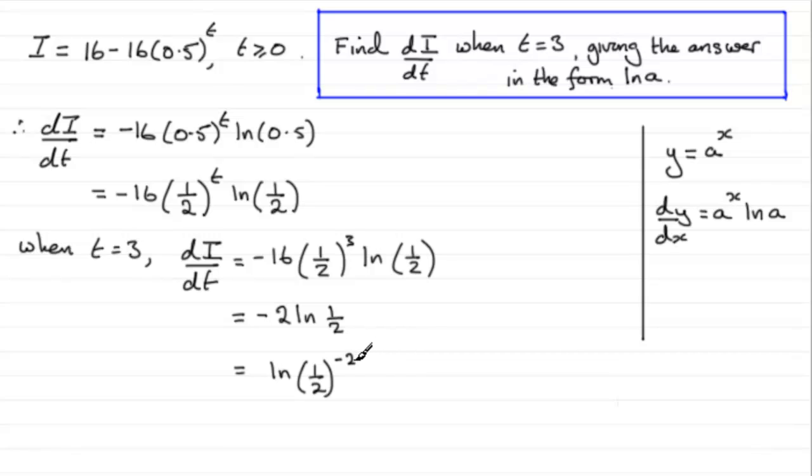Now when you've got something to the minus 2, that's 1 divided by a half, then all squared. So you're going to get the natural log of 1 divided by a half squared. Well, a half squared is a quarter. 1 divided by a quarter is 4. So you end up with the natural log of 4.